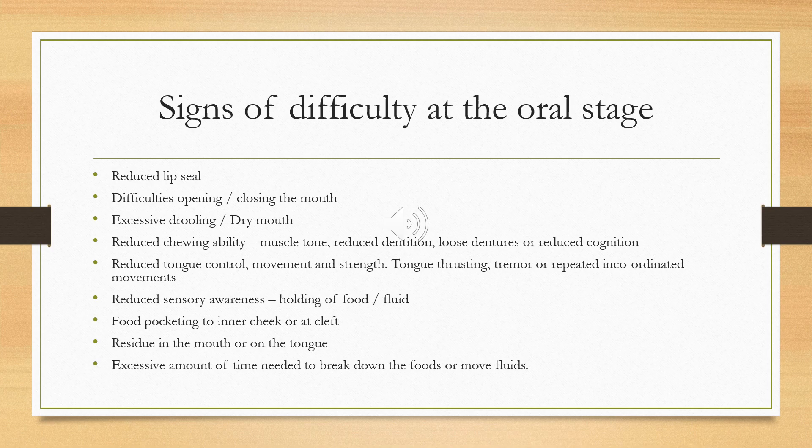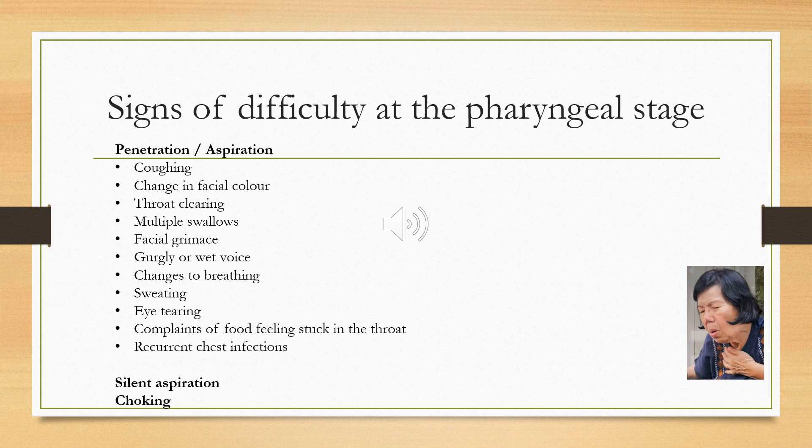If somebody has a very high palatal arch, food can get stuck up there. Other difficulties include a lot of residue in the mouth or on the tongue, and if a person needs an excessive amount of time to break down foods or move fluids — remember the swallow is all muscle, and if we're very tired it can affect that. Some signs of difficulty at the pharyngeal phase include penetration — where material instead of going down the food pipe goes towards the vocal folds but is ejected — and aspiration, where material goes past the level of the vocal folds and down towards your lungs. Signs include coughing, changes in facial color, throat clearing, multiple swallows.